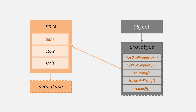Since Mark is an instance of the object constructor, this Mark object will have access to the prototype property of object constructor. And on this prototype property of object constructor, we have several useful methods like hasOwnProperty, isPropertyOf, toString, etc. Since Mark is an instance of this object constructor, this Mark object will have access to this prototype property of object constructor — meaning you can call any of these methods on this Mark object.